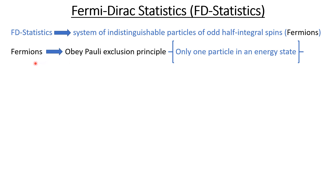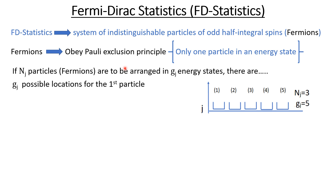Fermions are a family of particles which obey the Pauli exclusion principle — that is, we must have only one particle in one energy state. You cannot put more than one particle in an energy state; this is forbidden by the Pauli exclusion principle. So you have, for example, nj particles that are fermions.